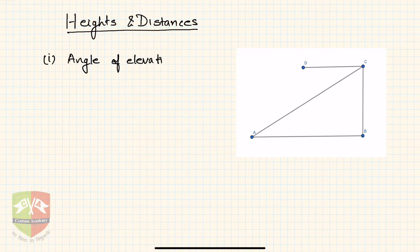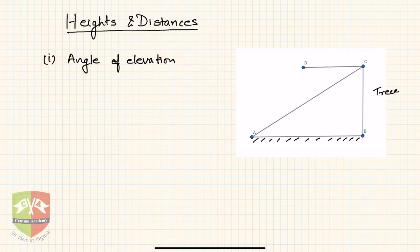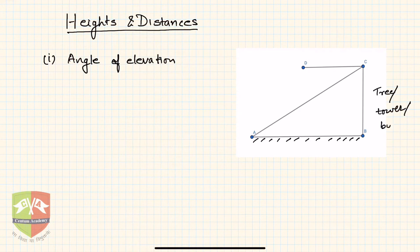I have drawn a representative diagram here. Let's say AB represents the ground — you are standing on the ground. BC represents a tree, a tower, or a building whose height you want to measure.